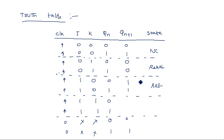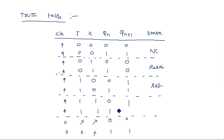JK flip-flop follows the same steps as SR until J=1, K=1. When J equal to 1, K equal to 1 — in SR flip-flop this gives an indeterminate state — but that indeterminate state is eliminated in the JK flip-flop because of the feedback shown in the internal diagram. So in this case the output is the complement of the previous state: if the previous state is 0, now it is 1; if the previous state is 1, now it is 0.